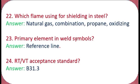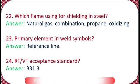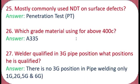Question 23: What is the primary element in a weld symbol? This is a different type of question — the answer is the reference line. Question 24: What is the RT and VT acceptance standard? The answer is ASME B31.3.